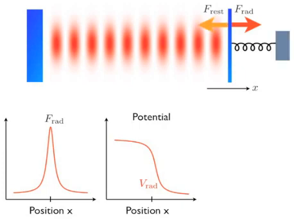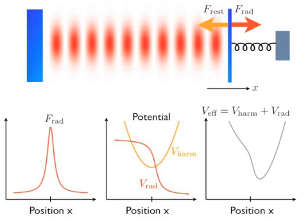Now assume that the motion of the mirror can be modeled as an harmonic oscillator. We can easily incorporate this into the potential picture by adding an harmonic potential to the radiation pressure potential. The motion of the mirror is thus governed by an effective potential, which is the sum of the harmonic and radiation pressure potential.